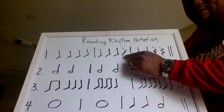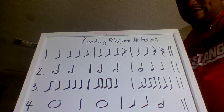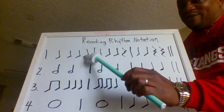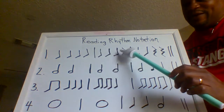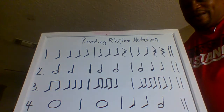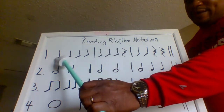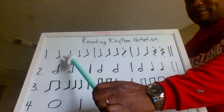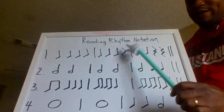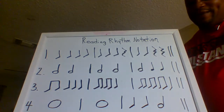Let's clap and count this first line. Ready — two, ready, and count: one, two, three, four, one, two, three, rest, one, two, rest, rest. Good job. Let's try that one again: one, two, three, four, one, two, three, rest, one, two, rest, rest.